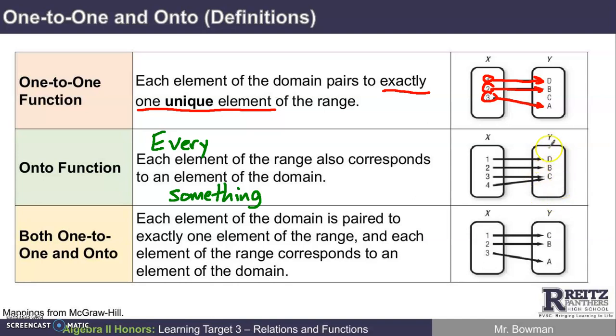So if I look at this function here, and I can see that it is a function, every element in the range, every element is hooked up to something. This up here, this first function is a good example of one that is not onto. This one is not onto, because the element c in the range is not hooked up to anything. This one is onto, because everything that's in the range, d, b, and c, is hooked up to something in the domain.